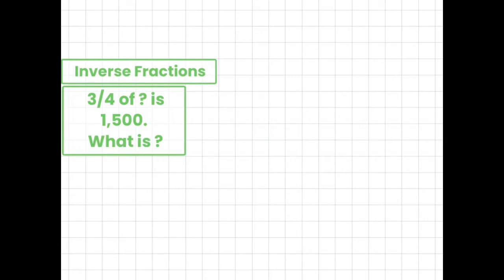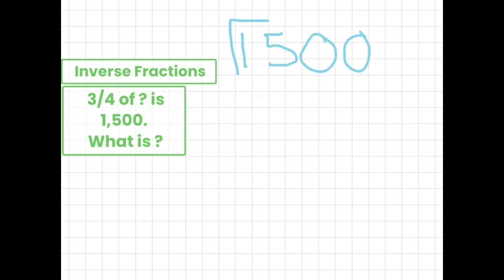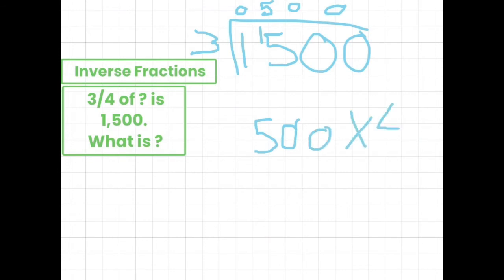Three quarters of something is 1,500. What is something? The way to figure this out would be to divide 1,500 by 3, which would be 500. Then we just do 500 times 4, which then equals 2,000.